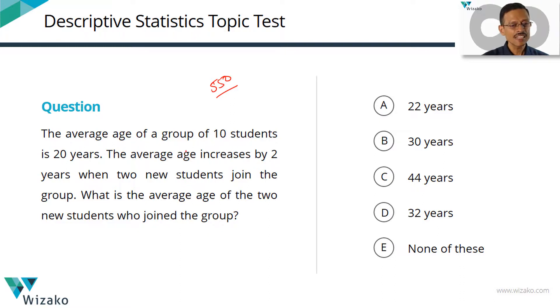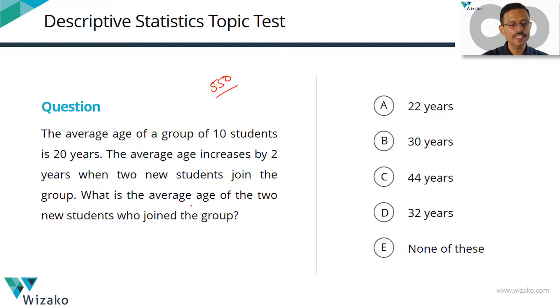The average age of a group of 10 students is 20 years. The average age increases by two years when two new students join the group. What we need to find out is the average age of the two new students.